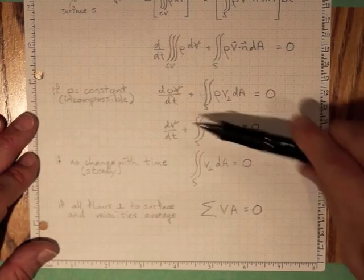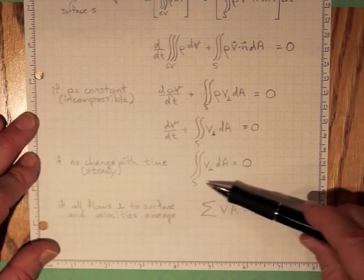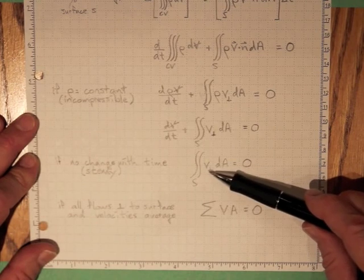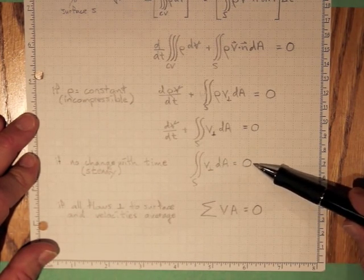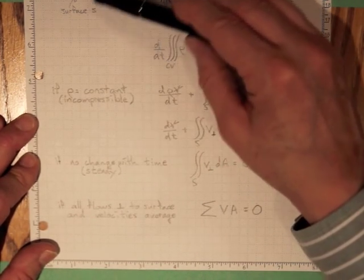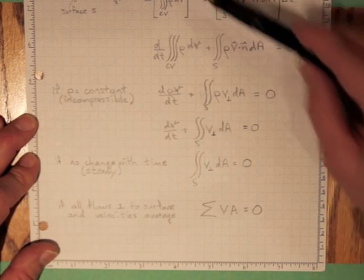If there's no change with time, then it's zero, and then the integral over the surface of V perpendicular dA must be equal to zero. Whatever goes in must be balanced by something coming out.